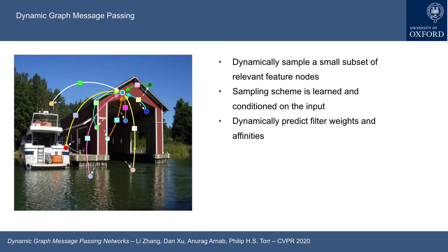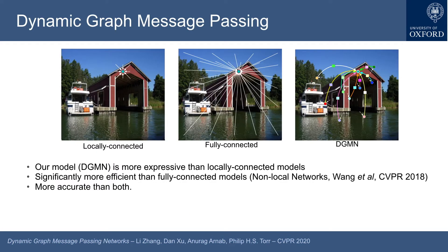Our proposed approach dynamically samples a small subset of relevant feature nodes based on a learned dynamic sampling scheme, and also dynamically predicts their filter weights and affinities, which are both conditioned on the sampled feature nodes. Our model, DGMN, is more expressive than a locally connected model and significantly more efficient than a fully connected model.